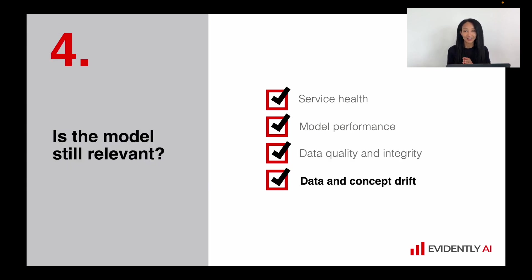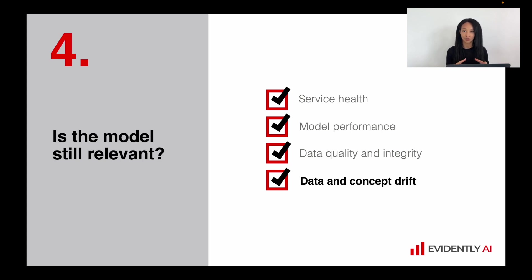Even if there are no issues with data quality and integrity, we can still face problems, because our model never works in a vacuum — it always interacts with a real-world environment, and things tend to change. In this case, I would suggest calculating data drift and concept drift. These are metrics that help us compare the distributions of input data, model output, and the target function against a reference dataset — the dataset when we were happy with model performance. If there are changes in distributions, we can assume something might go wrong with the model. It might not, but it serves as a very nice early signal of potential problems.